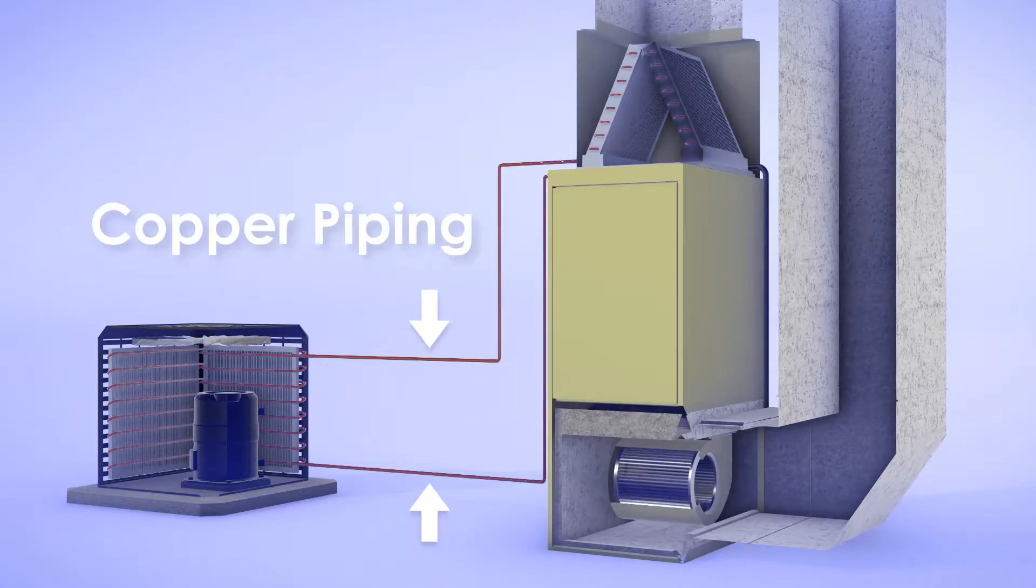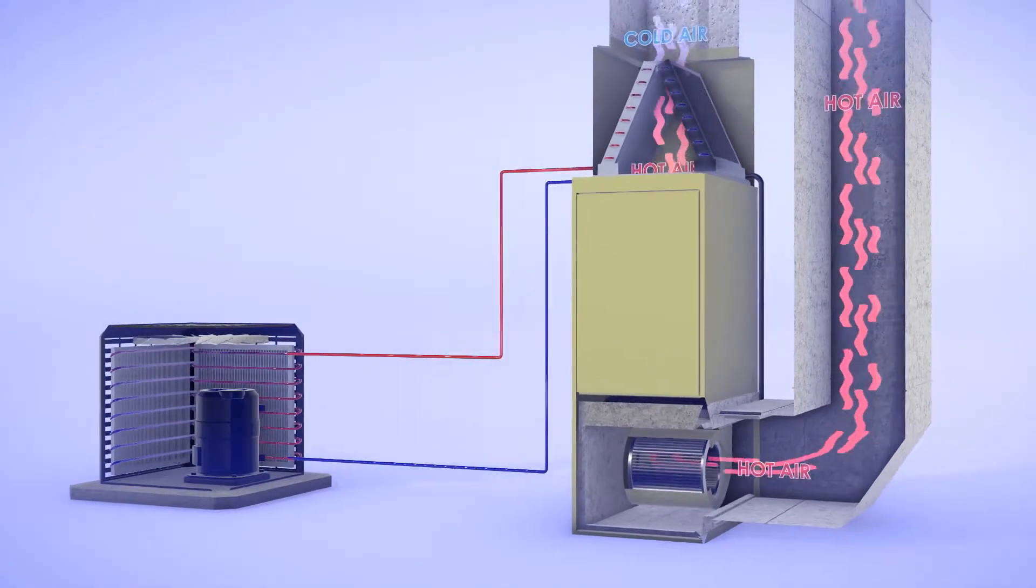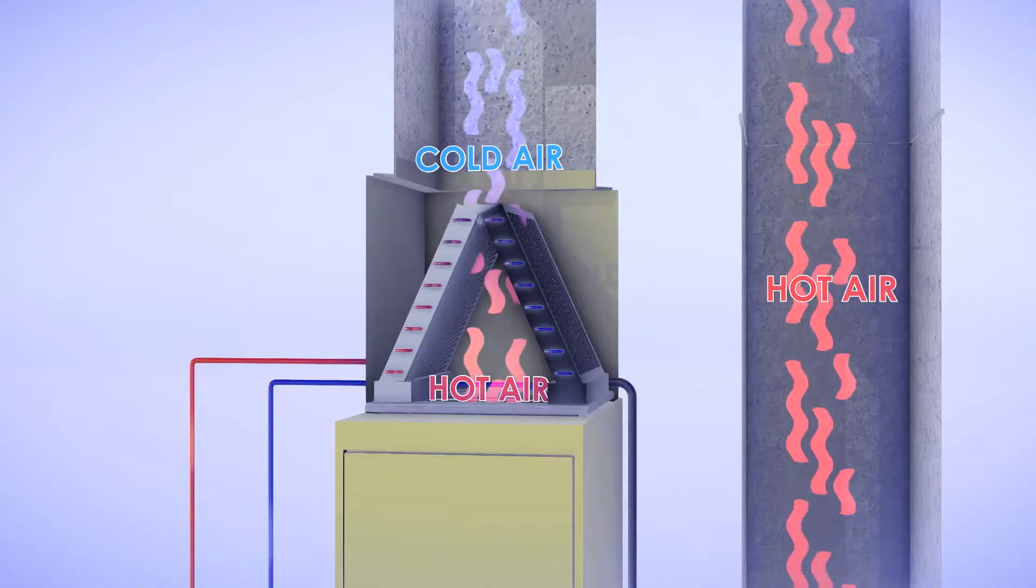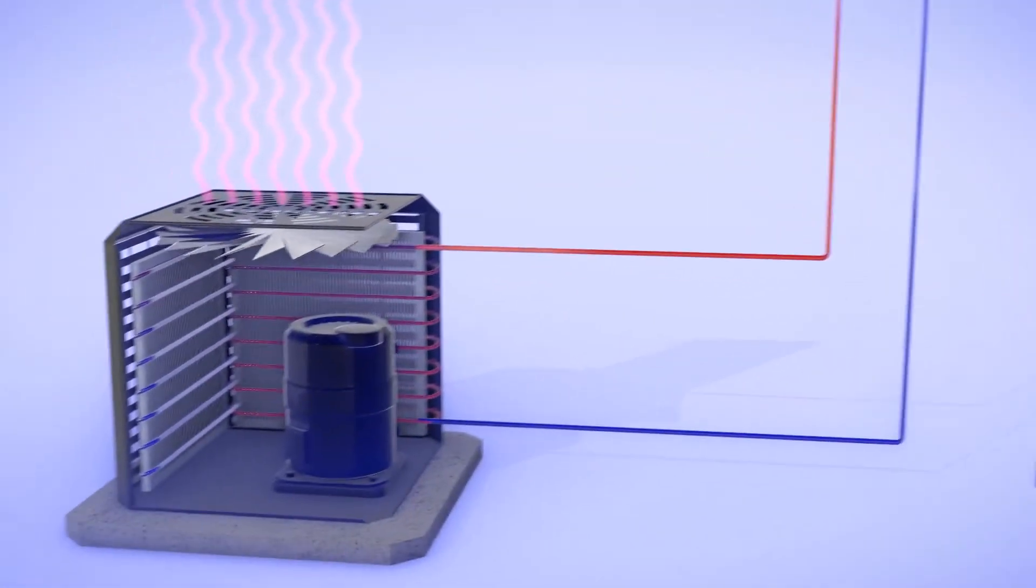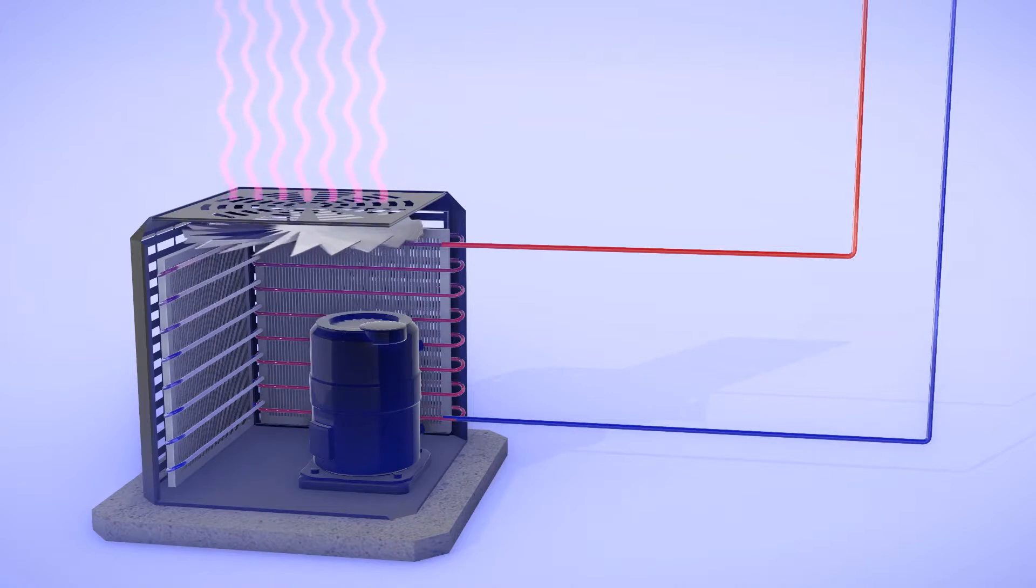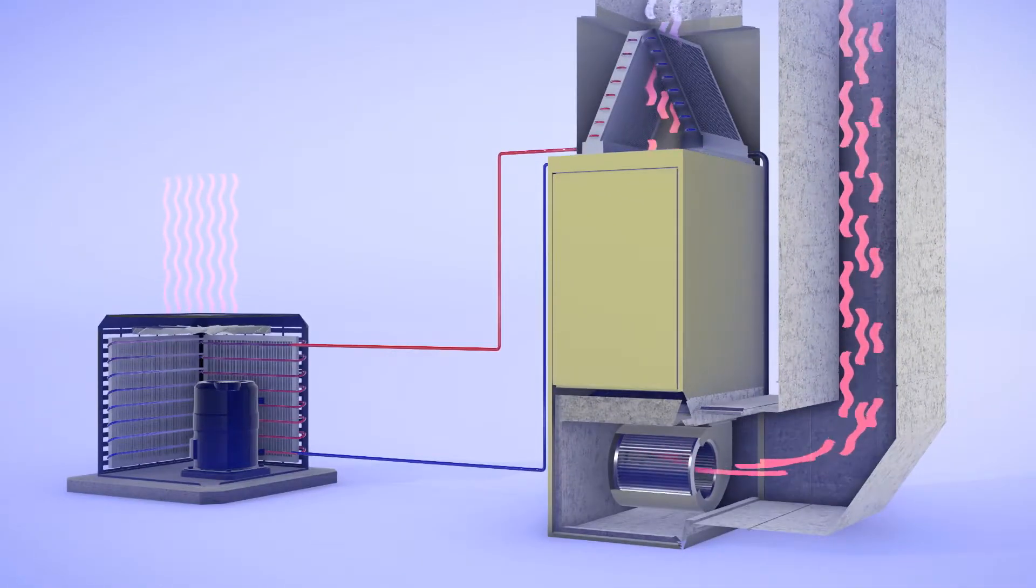Copper piping connects the inside and outside units, which contains refrigerant. The refrigerant acts like a sponge and soaks up heat from the indoor air. It then carries the heat to the outside unit, whose job is to wring the heat out. The process is then repeated over and over until your house is cooled.